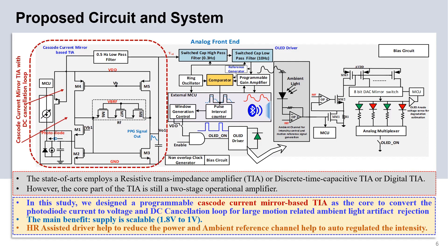The proposed circuit and system is shown here. It consists of a cascode current mirror TIA with a DC cancellation loop. The DC cancellation loop is used to remove or mitigate the effect of the change in ambient light due to motion, which causes huge DC drift.